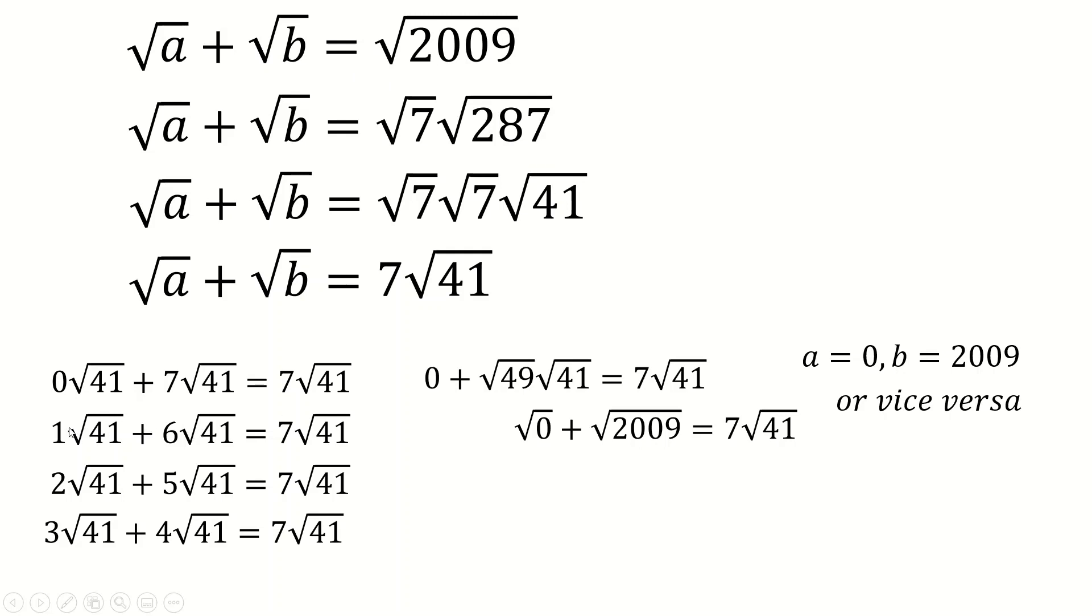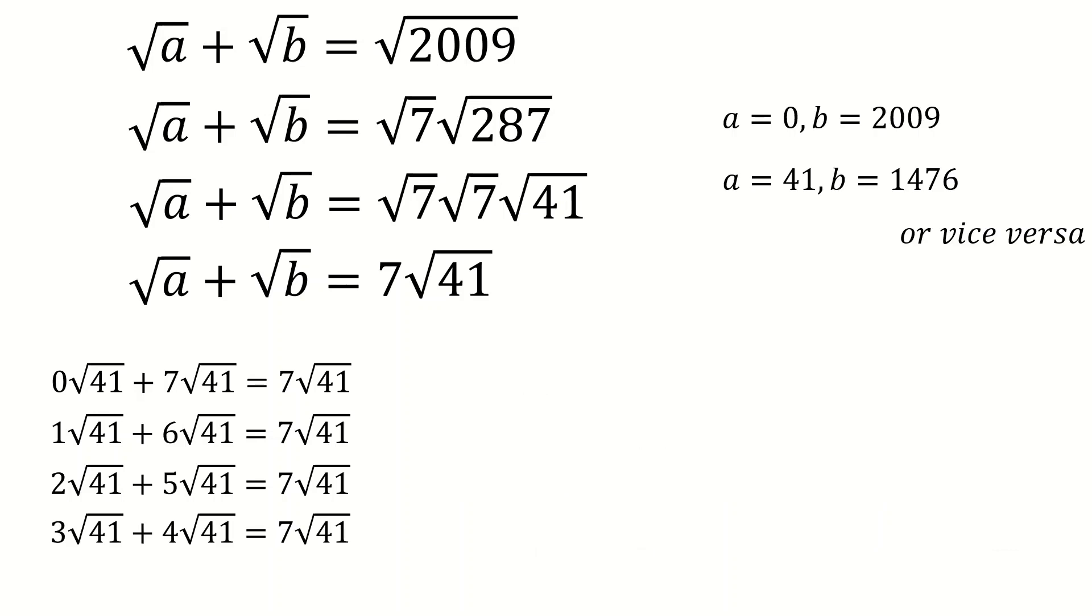But then we look on to the next one and we say well we've got 1 root 41 plus 6 root 41. But 6 can be written as root 36. And we can put these two numbers together. And we get our second solution of A is 41 or B is 1476. Again or vice versa. And we just keep doing this. Those are two pairs.